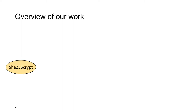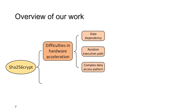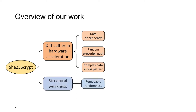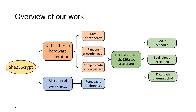In this paper, we analyzed the structure of SHA-256-crypt and demonstrated the difficulties of accelerating it with special-purpose hardware, which include the data dependency that stalls the pipeline, the random execution path, and the complex data access pattern. We also found a structural weakness in SHA-256-crypt which makes it possible to remove the randomness. Based on these findings, we proposed a fast and energy-efficient accelerator with several techniques, such as group schedule, look-ahead execution, and data-path pruning and multiplexing. Compared with state-of-the-art works, our accelerator achieves significant improvements on performance and energy efficiency.